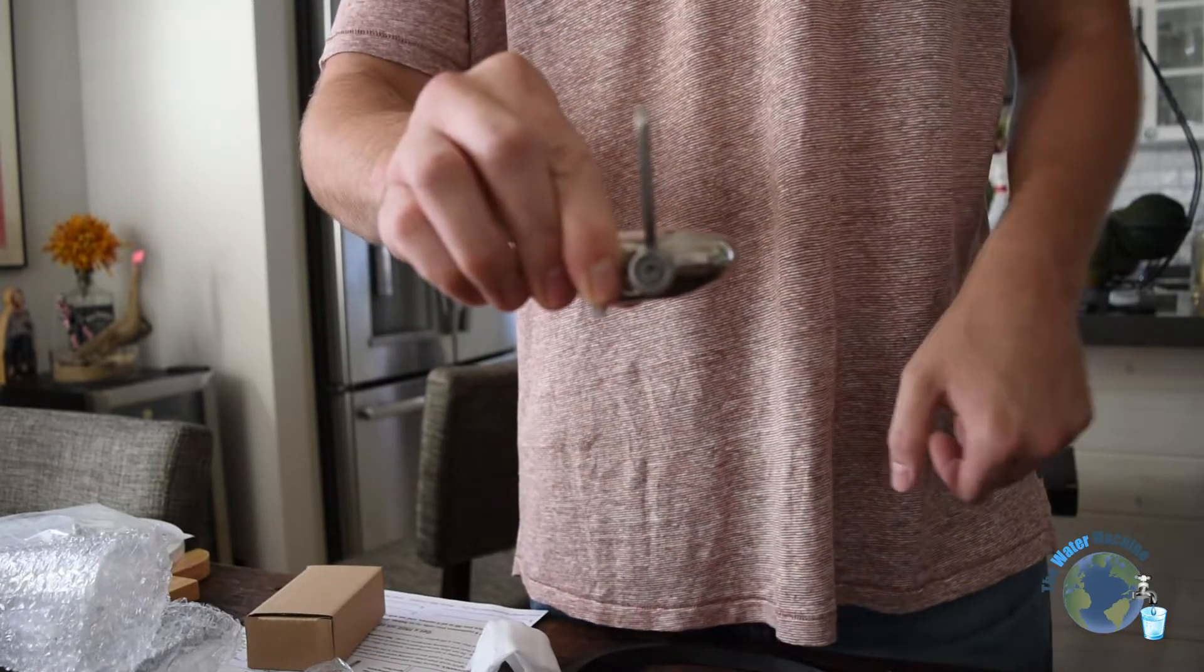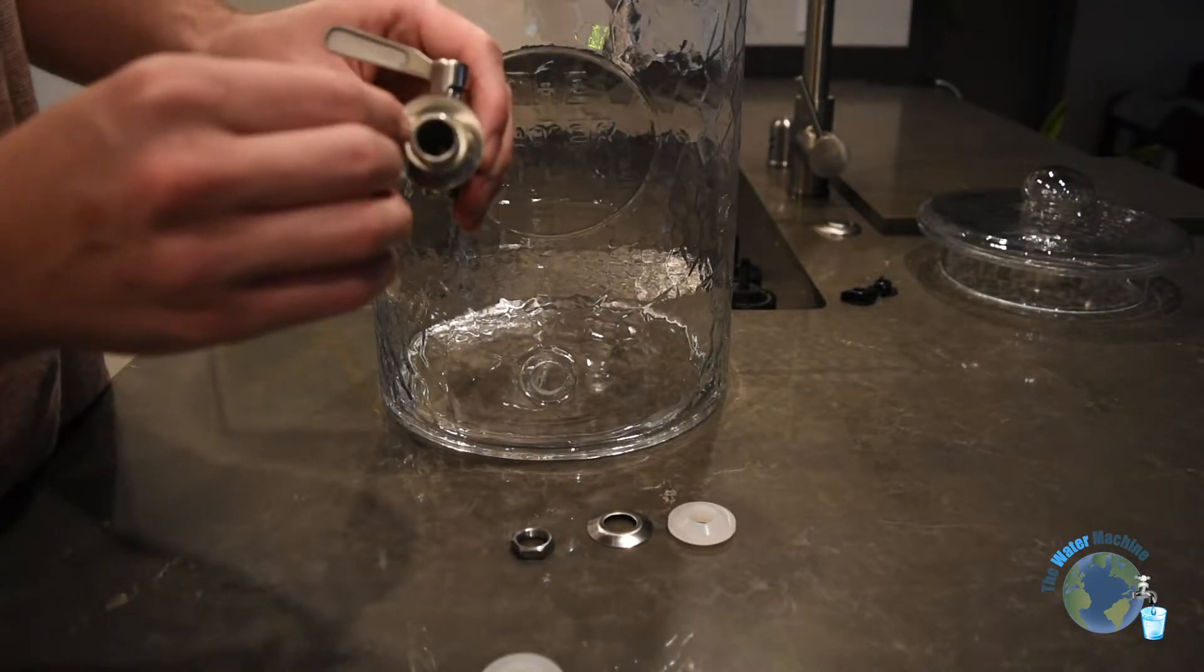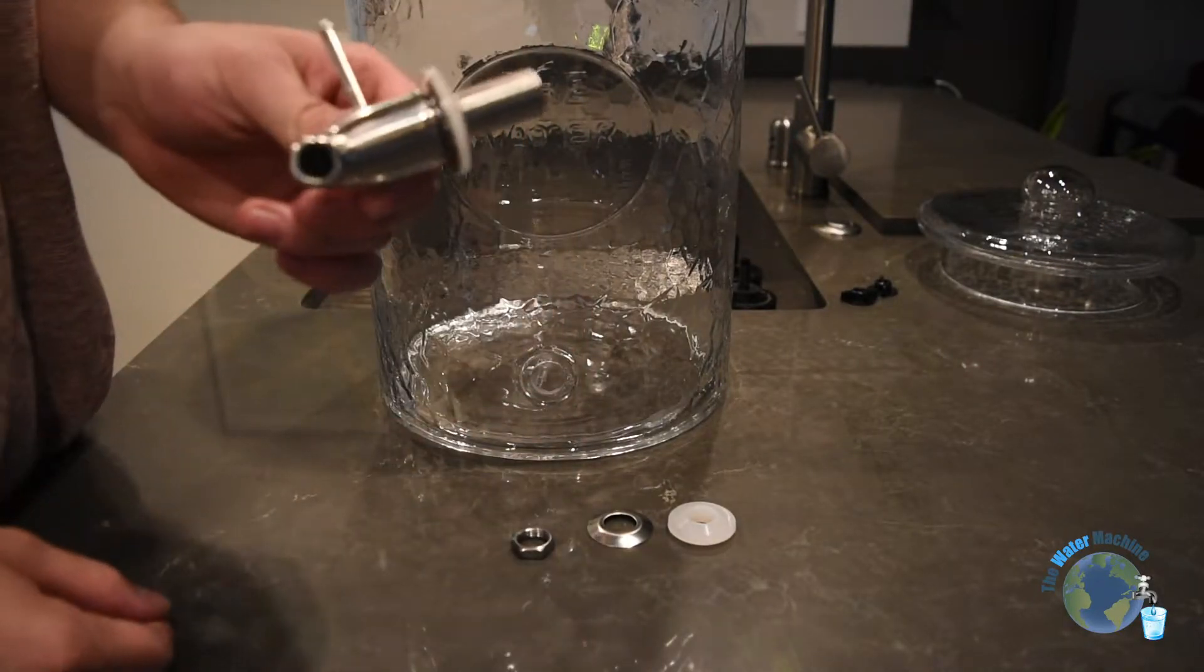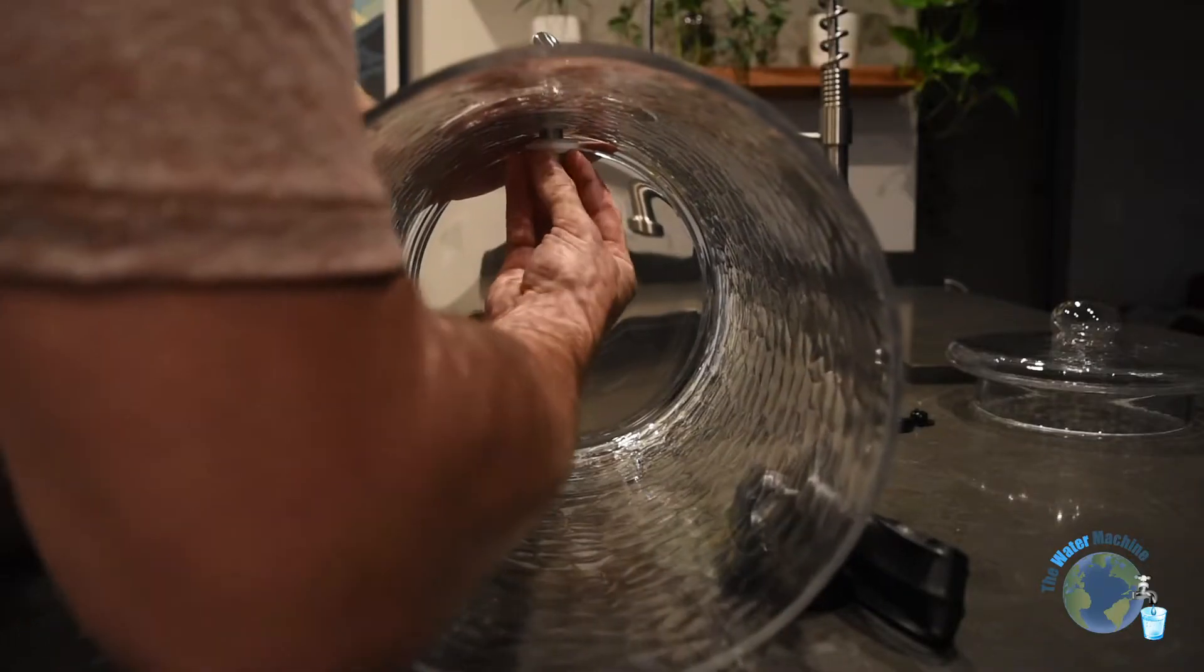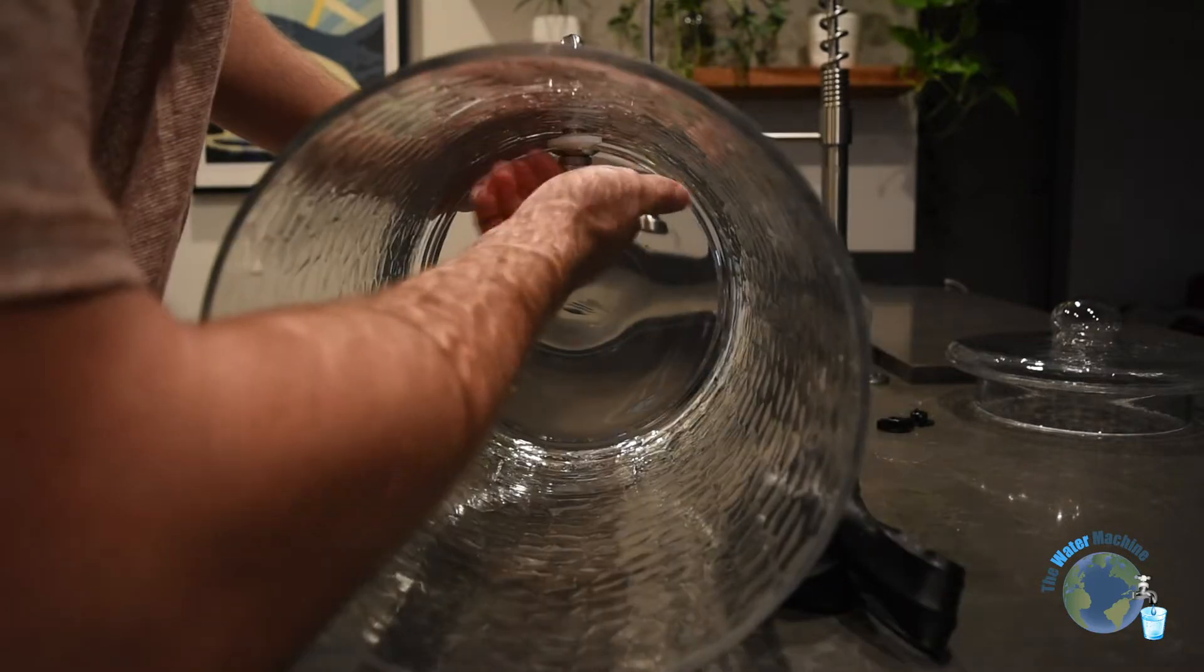Turn the spigot handle to the off position and install it by hand. No tools necessary. It has beveled washers for each side of the glass and two protective metal rings that go on after the rubber washers. Hand tighten the nut on the inside of the chamber.